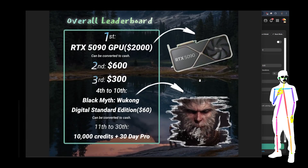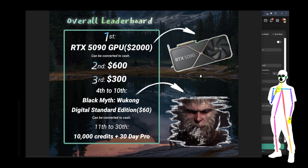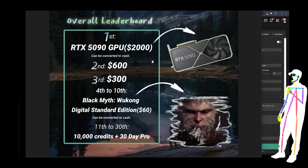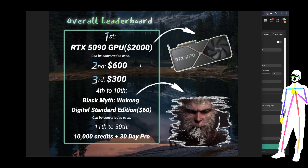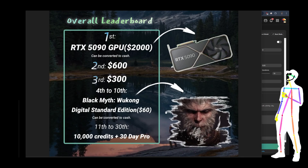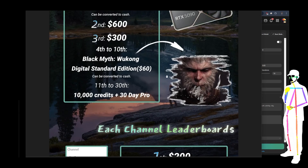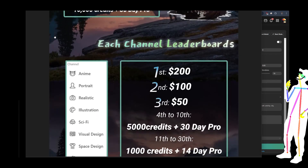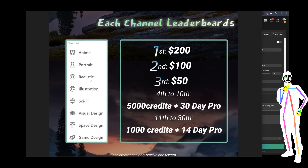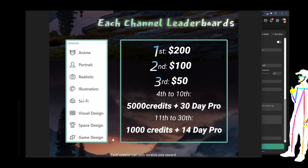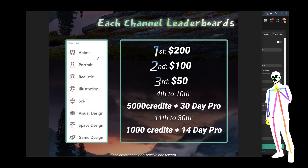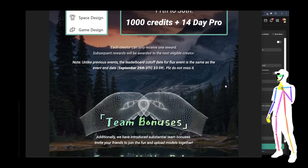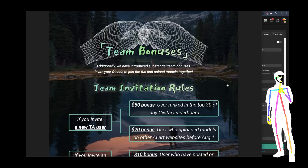One of the prizes is a 5090 GPU — that's right, they're coming out this month. Everyone thought it was next year, but nope, this month the 5090 drops — be in the chance of winning one. You've got runner-up prizes of cash or copies of Black Myth: Wu Kong — pretty cool. You can also just convert to cash. And after that, free memberships and credits for generations and trainings. We've also got channel leaderboards for each of these topics. So even though it was called the Wilderness Challenge, it's for just about every genre. They're really pushing hard to try and get good model creators to come and share their stuff here.